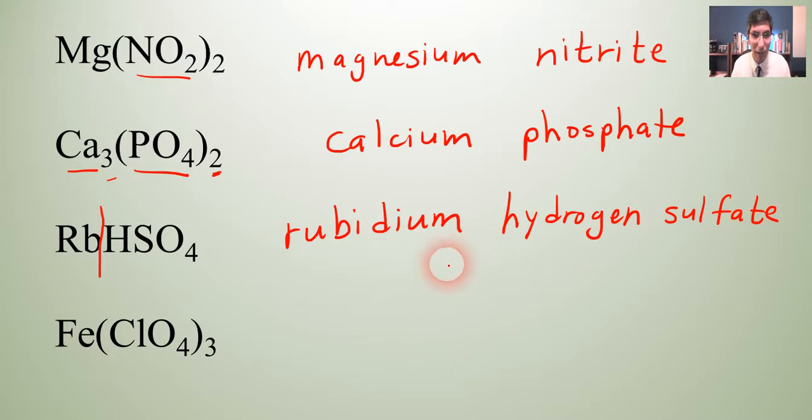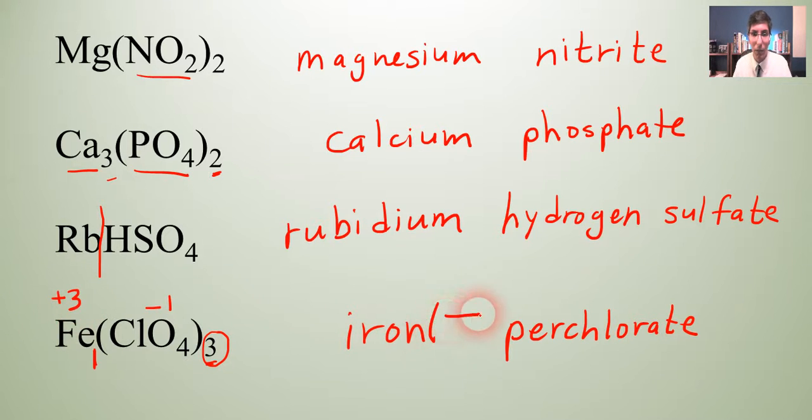Next, we have Fe, which is iron. So we write that down. And then we have ClO4, which is perchlorate. Iron perchlorate. Now, you might remember iron is a transition metal. So we're going to have to figure out what is its charge to put in parentheses in Roman numerals. Well, we have to go back to the formula here. And this is where we have to start looking at those subscripts. We have to unswap the subscripts. We see a one here and a three here. So we have to unswap them. So the one, that was the charge on perchlorate. And that means this three right here is the charge on iron. So it's iron three perchlorate.